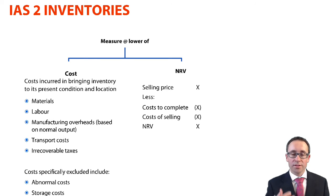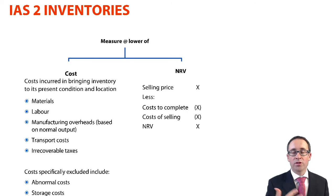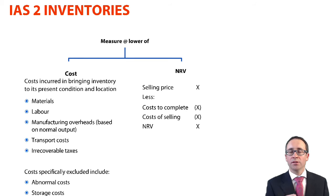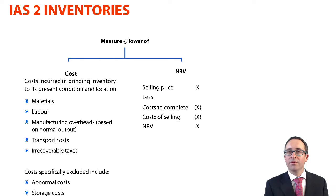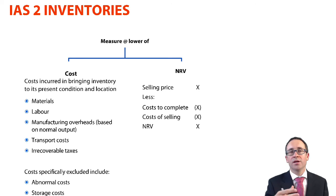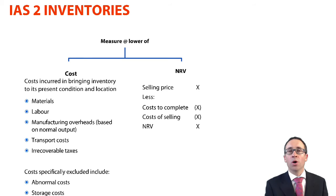It's all about inventories. IAS 2 is the accounting standard. The key thing we're trying to account for is the value of inventory at the end of the year. Your closing inventory journal is: debit the inventory on the statement of financial position within current assets, and credit closing inventory as part of cost of sales, because that closing inventory is next year's opening inventory.